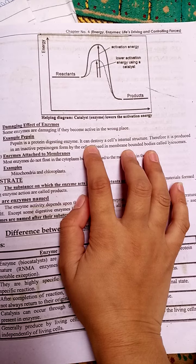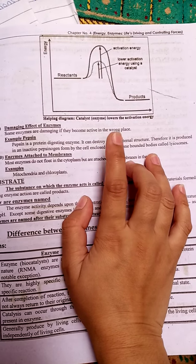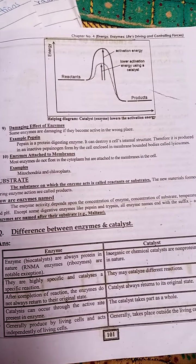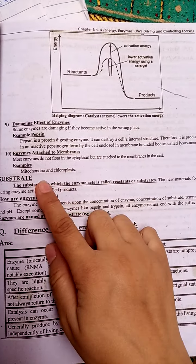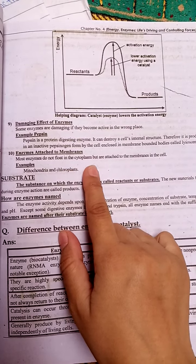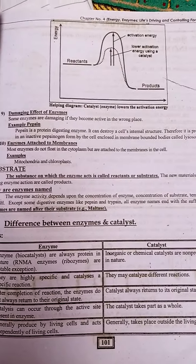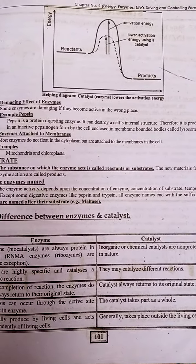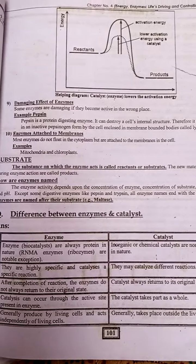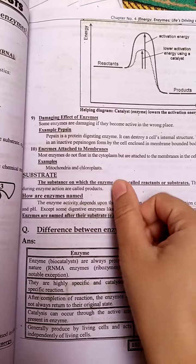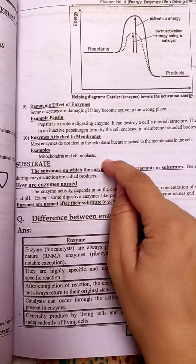Pepsin, as a protein-digesting enzyme, can destroy internal cellular structures if active in the wrong place — so it remains in an inactive condition. Most enzymes do not float freely in the cytoplasm but are attached to membranes within the cells, such as mitochondria.